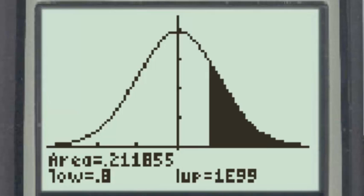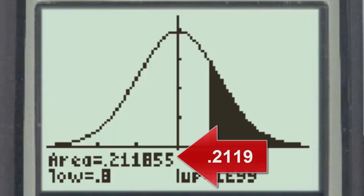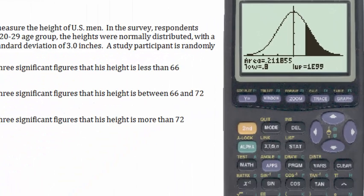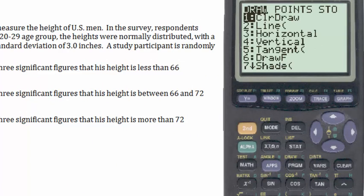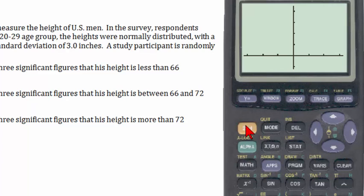Had we been asked to find this probability to four significant figures, the answer then would have been 0.2119. We will again clear the drawing by clicking on the second draw button and then clicking enter. And now back to the home screen, second function quit, and clear the home screen.